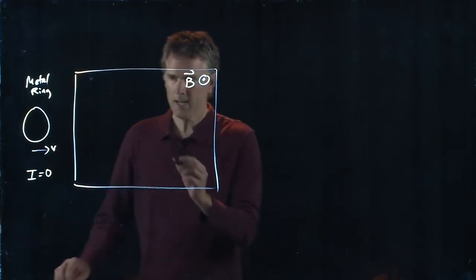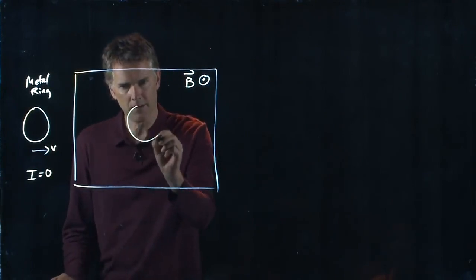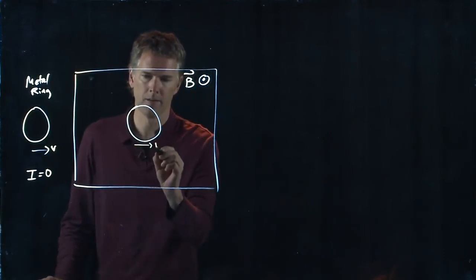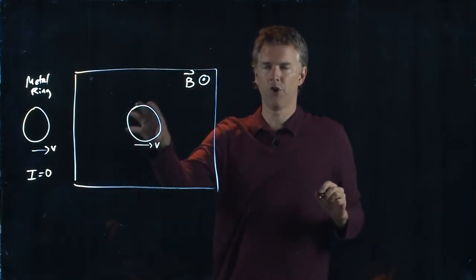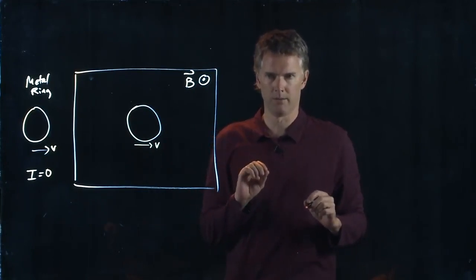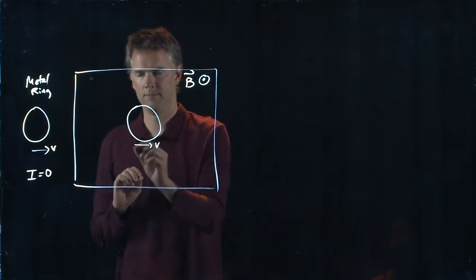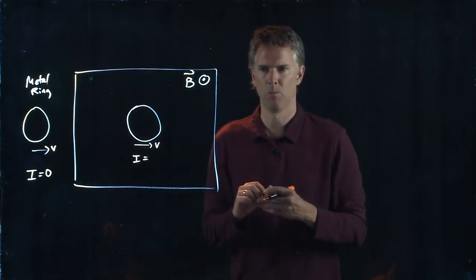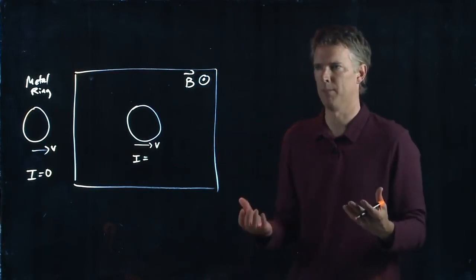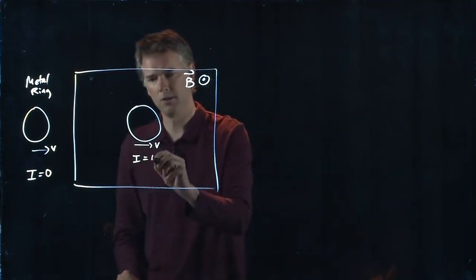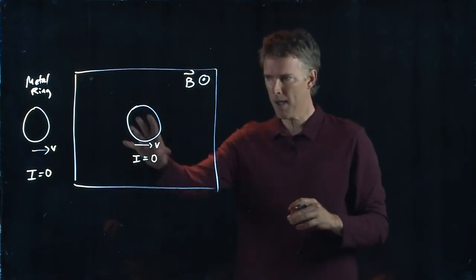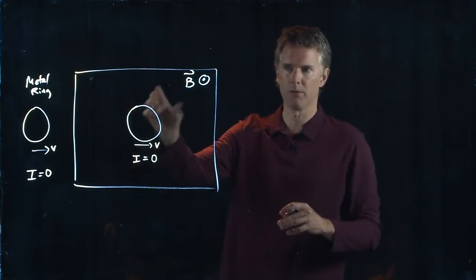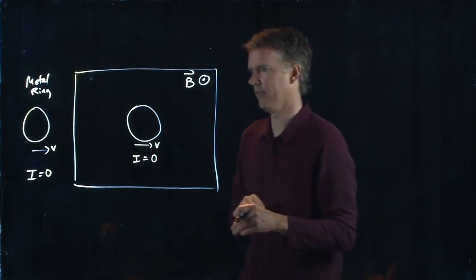When it is in the center of this region and it's still moving to the right, what is the current in the ring? What do you guys think? What is it 90% of the time when I ask you? Zero. The current's zero. Why? Because the flux is not changing in this region. It's moving through a constant magnetic field, a uniform magnetic field.